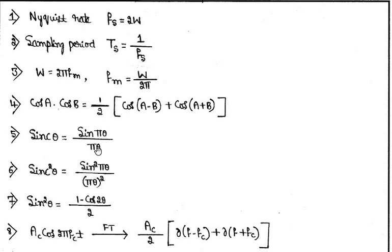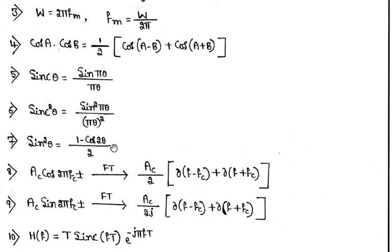We have already seen in the interpolation formula: sinc(θ) = sin(πθ)/(πθ), sinc²(θ) = sin²(πθ)/(πθ)², and sinc²(θ) = (1 − cos2θ)/2. For any message signal, if they ask you to represent it in the frequency domain and plot the spectrum, we need to take the Fourier transform. If a signal is given in cosine form, the Fourier transform gives (A/2)[δ(f − fc) + δ(f + fc)].